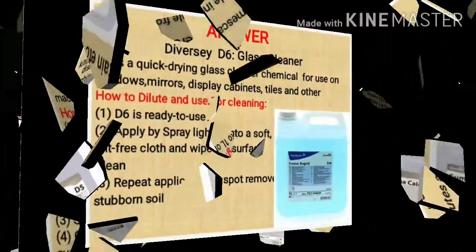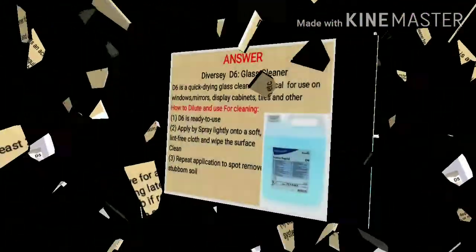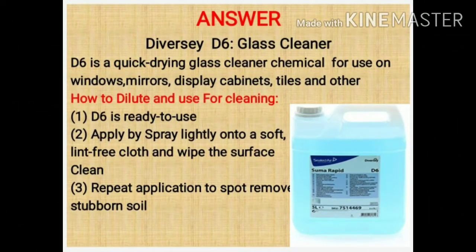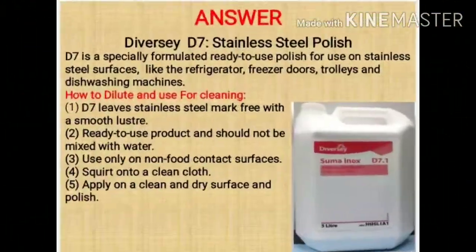Agla chemical hai D6. Ye ek glass cleaner hai, ismein bhi koi paani nahi milaya jata, ye ready to use hota hai — isko bottle mein se nikalo aur seedha use karo. Isse hum window, mirror, display cabin, tiles aur other surfaces saaf kar sakte hain.